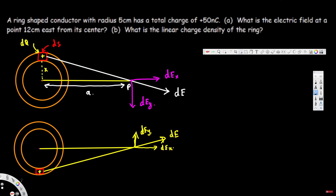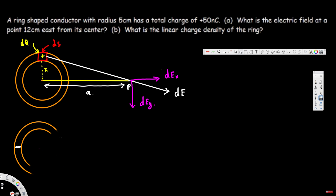Along the upper half of the ring, all y-components of the electric field point downward; along the lower half, all y-components point upward. Since the magnitudes are equal and directions are opposite, the y-components cancel each other. The x-components, however, all point in the same direction and add up. So we only need to consider the x-component of the electric field.